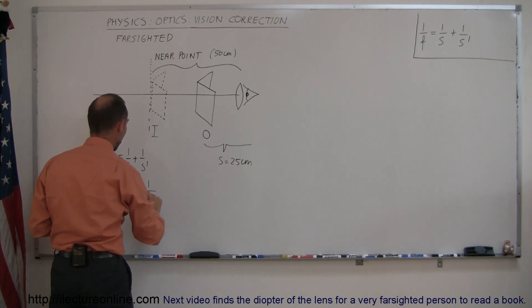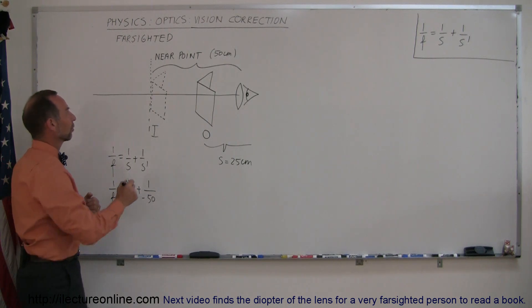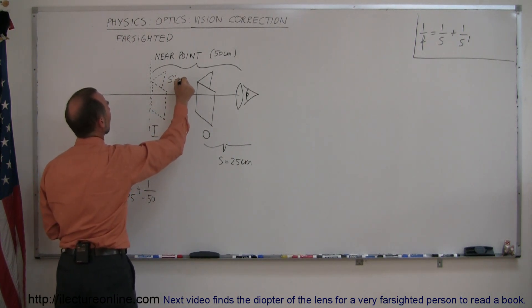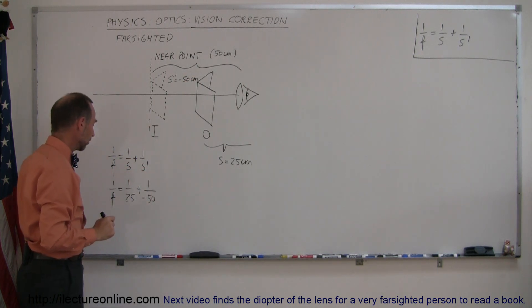So we want minus 50 centimeters here because the image needs to be formed in front of the lens. So s prime is equal to minus 50 centimeters. Let's then work out what this is equal to.